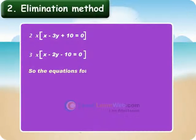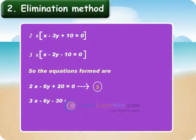So, the equations formed are 2X minus 6Y plus 20 is equal to 0. 3X minus 6Y minus 30 is equal to 0.